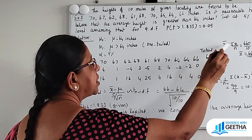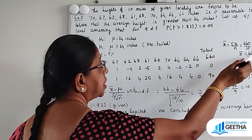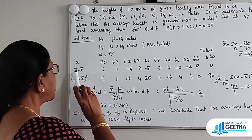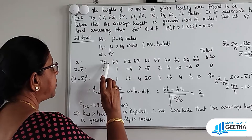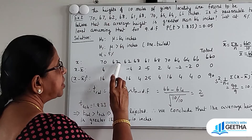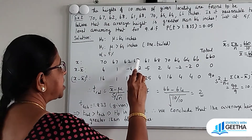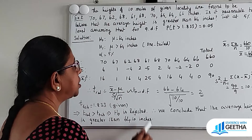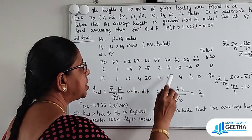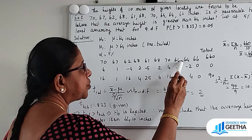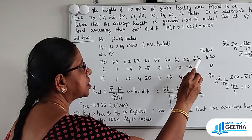Summation x by n: 660 divided by 10 equals 66. So x-bar is 66. Now x minus x-bar is calculated for each value: 70 minus 66 = 4; 67 minus 66 = 1; 62 minus 66 = minus 4; 68 minus 66 = 2; 61 minus 66 = minus 5; 68 minus 66 = 2; 70 minus 66 = 4; 64 minus 66 = minus 2; 64 minus 66 = minus 2; 66 minus 66 = 0.